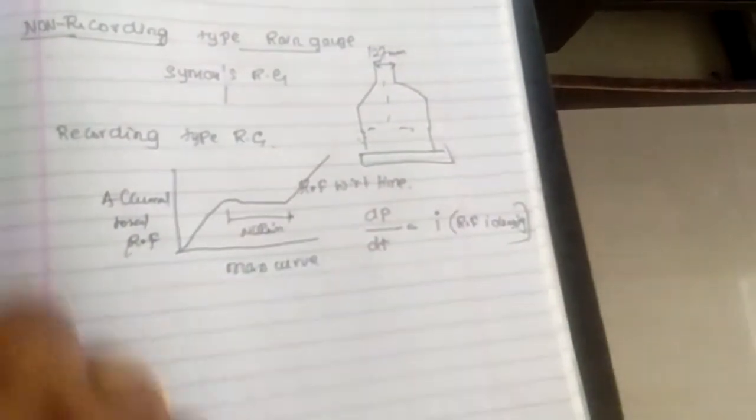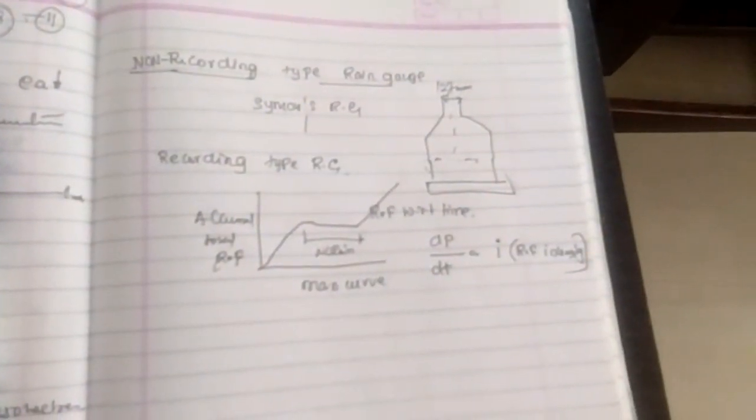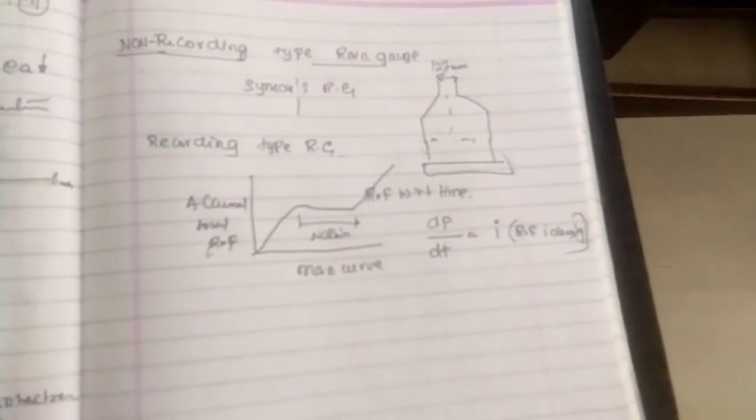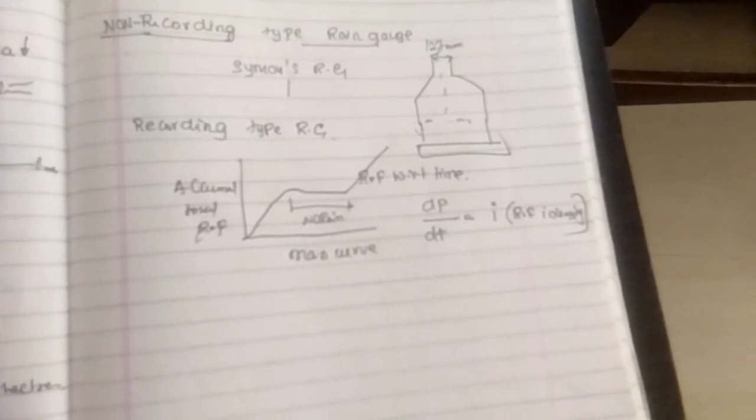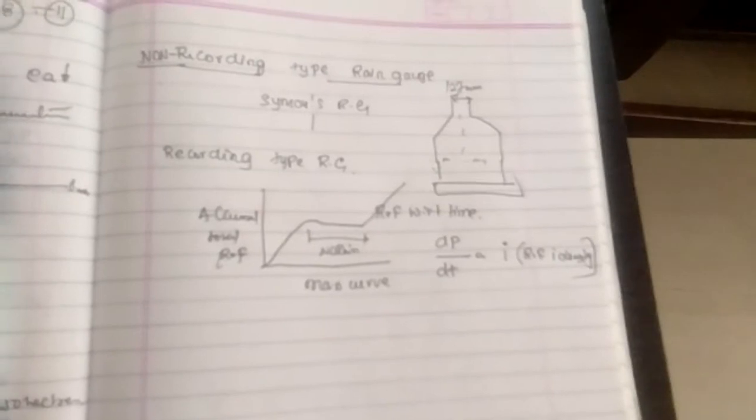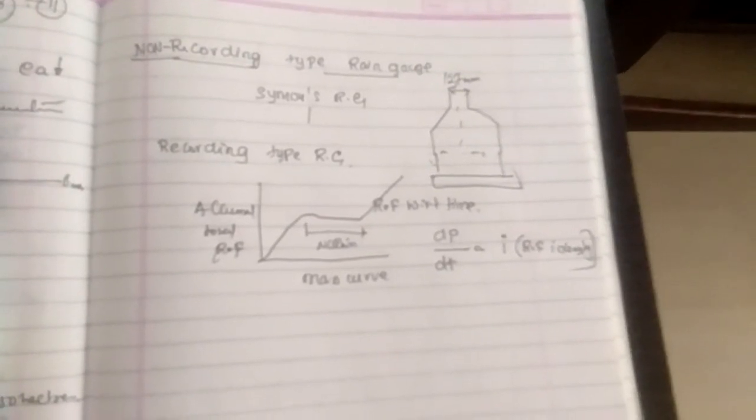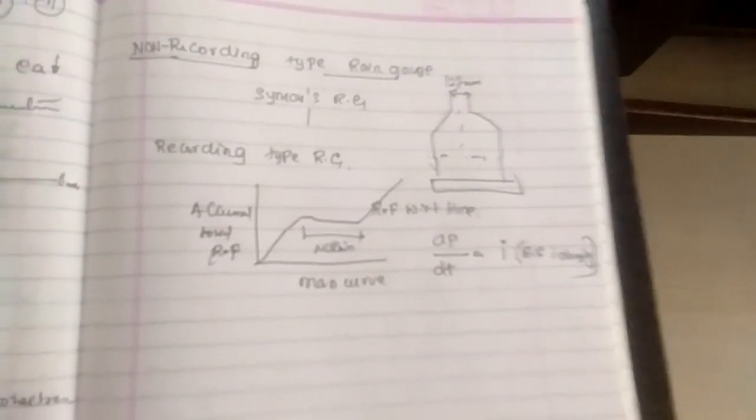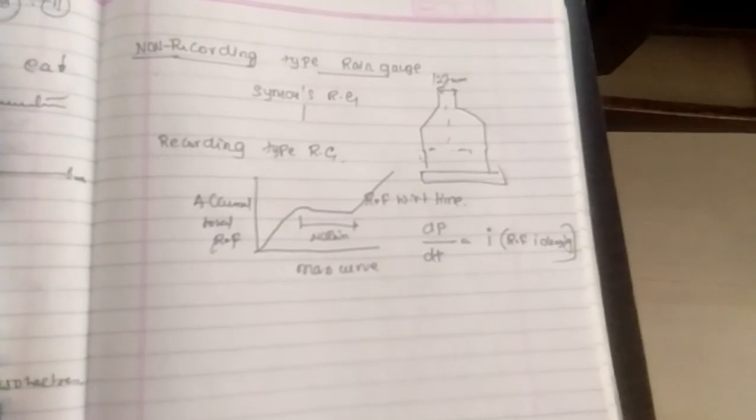Examples of this type include tipping bucket type, weighing bucket type, natural siphon type, and float type rain gauges. In India, the most commonly used is float type. The latest improvements in rain gauge techniques are as follows.